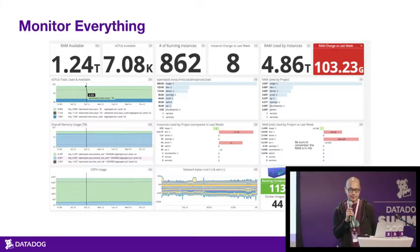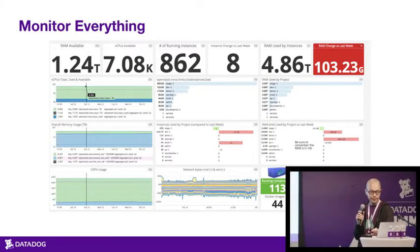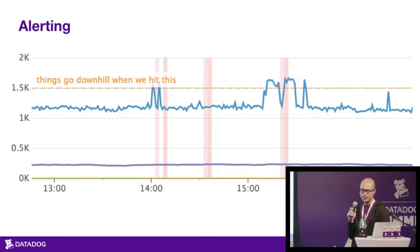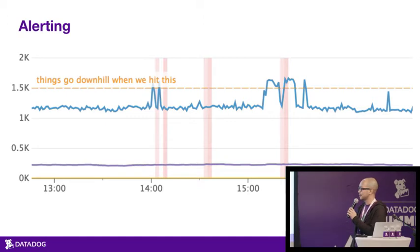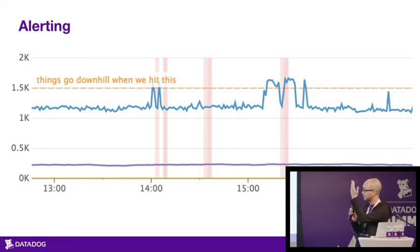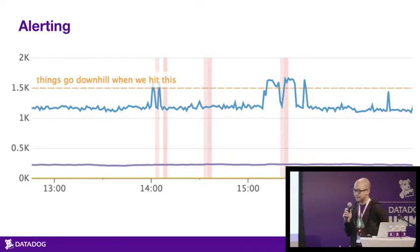As you all know, Datadog is great for monitoring your services and systems, and we make it painless to set up alerts — especially for things like resource metrics like disk space that can be exhausted, or metrics you just understand really well, like this one where we know that if it goes to 1.5K, things go downhill and an alert will go off.